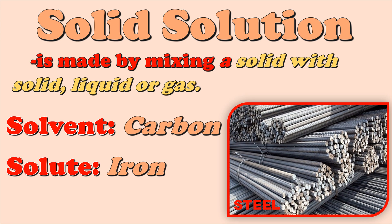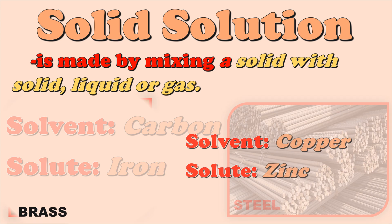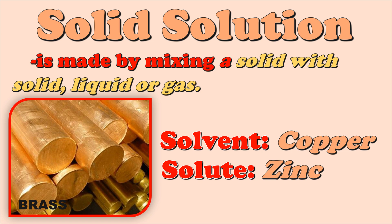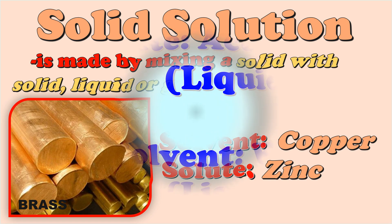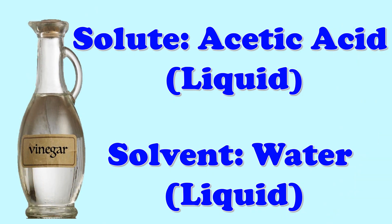Steel: the solvent in steel is iron and the solute is carbon. Brass is a combination of copper and zinc — zinc is the solute and copper is the solvent. Another example of a solution is vinegar — a combination of acetic acid, which is liquid, and water, which is also liquid. The solute is acetic acid and the solvent is water.